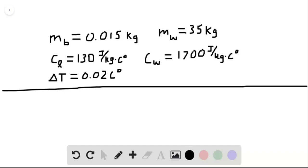So our question says we have a lead bullet with a mass of 15 grams. So I write it as M sub B and it's zero, I convert it into kilograms. So 15 grams is 0.015 kilograms.